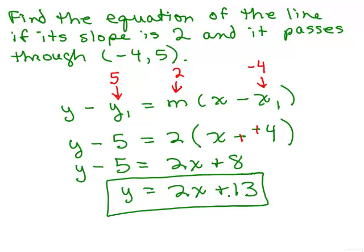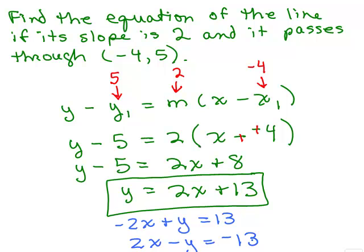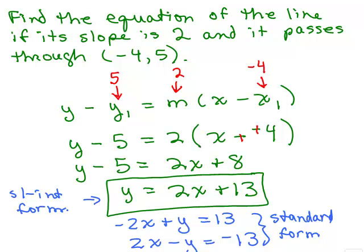The result y equals 2x plus 13 is in slope-intercept form. You could also put it in standard form by moving the x and y terms to opposite sides of the equation — written as negative 2x plus y equals 13, or equivalently 2x minus y equals negative 13 if you multiply everything by negative 1. Generally, write your answer in slope-intercept form or standard form, depending on what the directions specify.